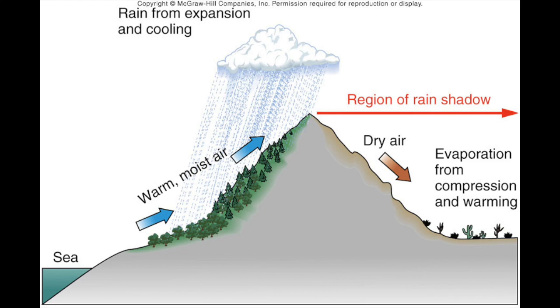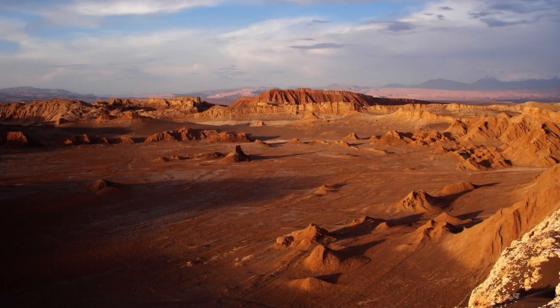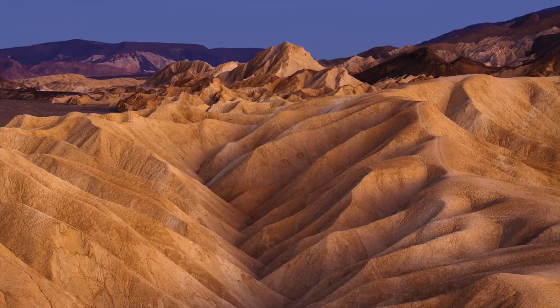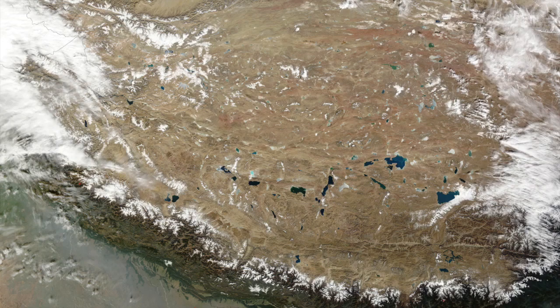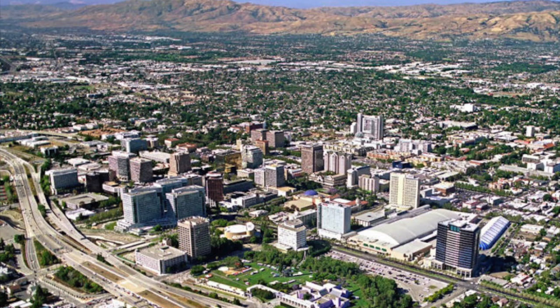Some rain shadow deserts include the Atacama Desert, one of the world's driest deserts. Also, Death Valley, California is a rain shadow desert. The Tibetan Plateau gets a rain shadow from the Himalayas, and San Jose, California gets a slight rain shadow effect, leaving it drier than most of the Bay Area.